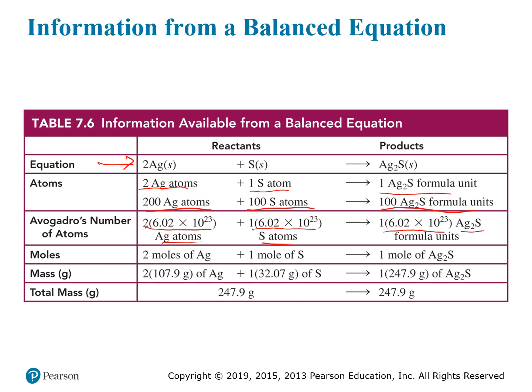Each Avogadro's number is really a mole, so we can read it as two moles of silver plus one mole of sulfur yields one mole of silver sulfide. Every substance has a specific molar mass. The molar mass of silver is 107.9 grams, so two times 107.9 plus the molar mass of sulfur, which is 32.07, yields 247.9 grams for the reactants. If you look at the formula for silver sulfide and add up the masses, you also get 247.9 grams. That's not a coincidence — the product is composed of exactly the same atoms as the reactants, so the masses have to be the same.